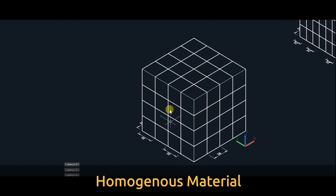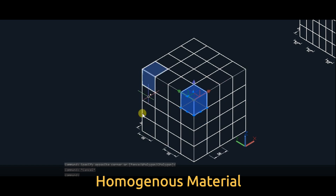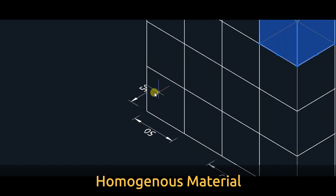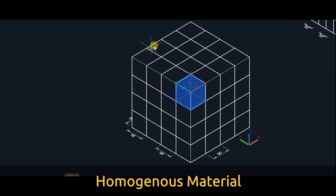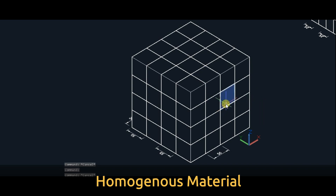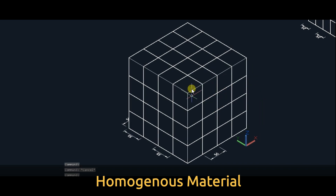Now look at this. Here we have some cubes. I have made it into three dimensions. This cube's base is 50 by 50 and height is also 50. So in three dimensions, everywhere the dimensions are the same — it is 50 by 50 by 50 for every cube. Any point you take, it is 50 by 50 by 50. So this material is called as a homogeneous material.